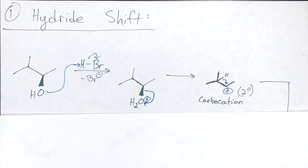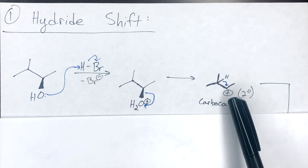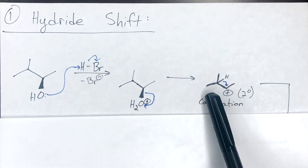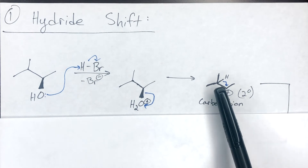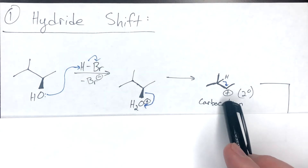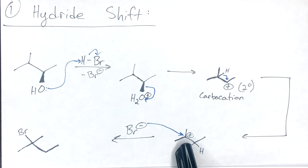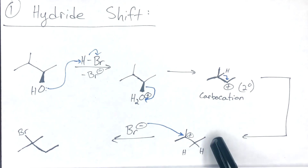We have an adjacent hydride — a hydrogen with its two electrons — and we're taking both electrons from that covalent bond. The blue arrow shows those electrons migrating with the hydrogen to the carbocation. What that does is put an extra carbon–hydrogen bond at that position. The positive charge now migrates to the carbon on the left because the two electrons that were in that bond have shifted, and nothing has replaced them — so that carbon is now electron deficient.